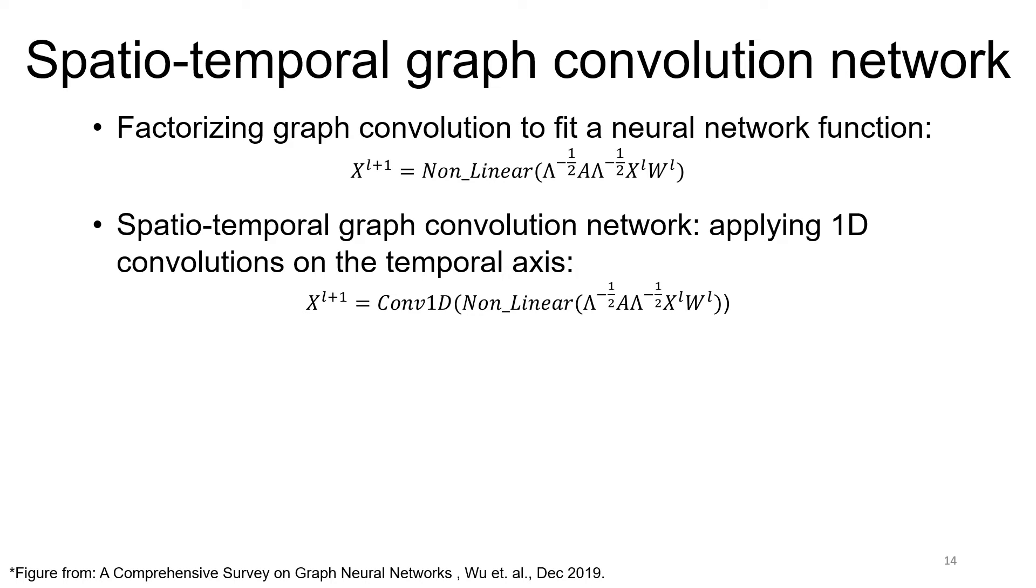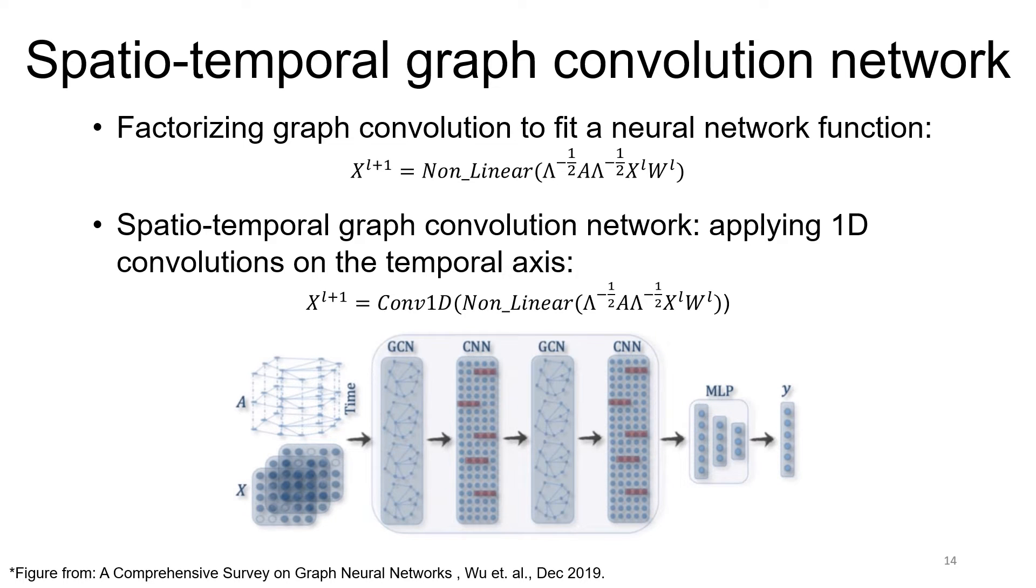For a spatiotemporal graph, we simply add one deconvolution layer that operates on the temporal axis. We can stack several spatiotemporal graph convolution layers to consider large region of interest for the graph convolution operation.